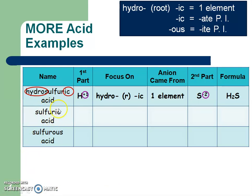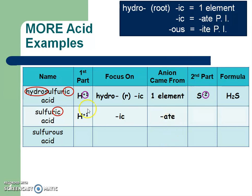Sulfuric acid. Acid tells me it's H plus 1. I'm going to focus on the name ending ic. Looking at my cheat sheet: ic came from an ate polyatomic ion — so sulfate. Looking at my ion sheet, sulfate is SO4 with a negative 2 charge. Like an ionic compound, I focus on the 1 and the 2 — those charge numbers are different — so I crisscross them and write H2SO4.